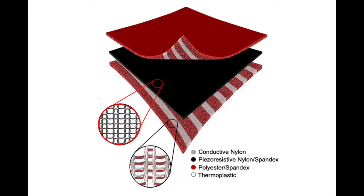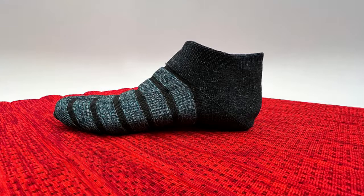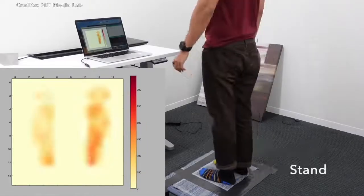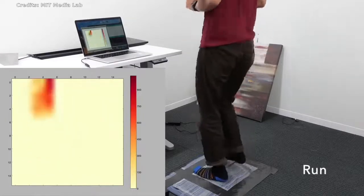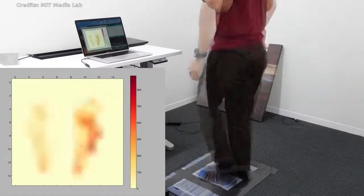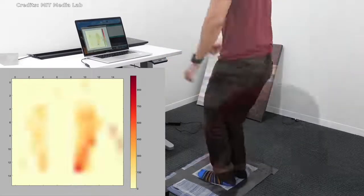They used this process to create a smart shoe and mat, and then built a hardware and software system to measure and interpret data from the pressure sensors in real-time. The machine learning system predicted motions and yoga poses performed by an individual standing on the smart textile mat with about 99 percent accuracy.